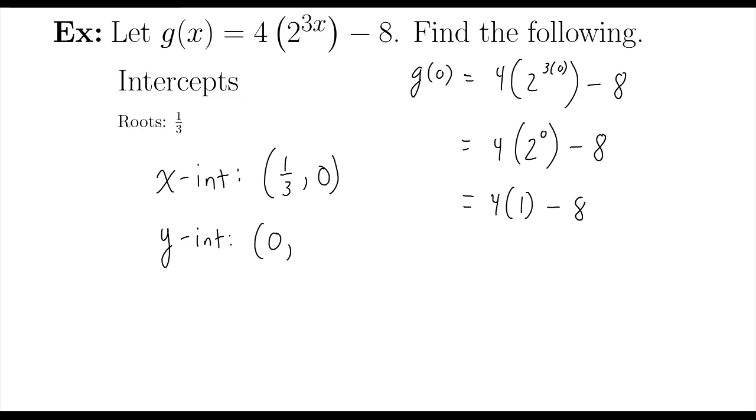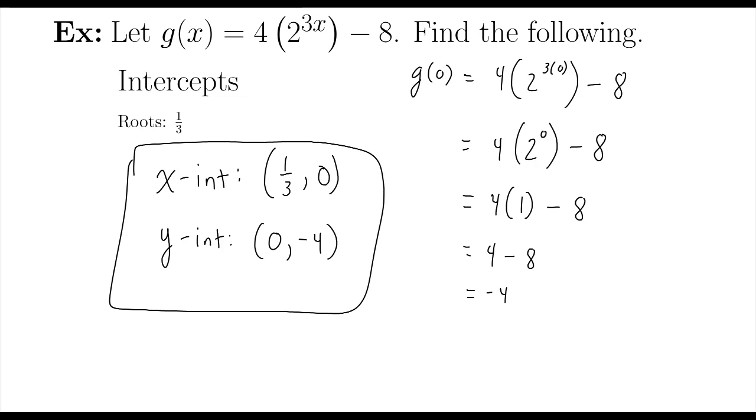So four times one minus eight, which of course is four minus eight, is negative four. So those are my intercepts: one-third, zero and zero, negative four.